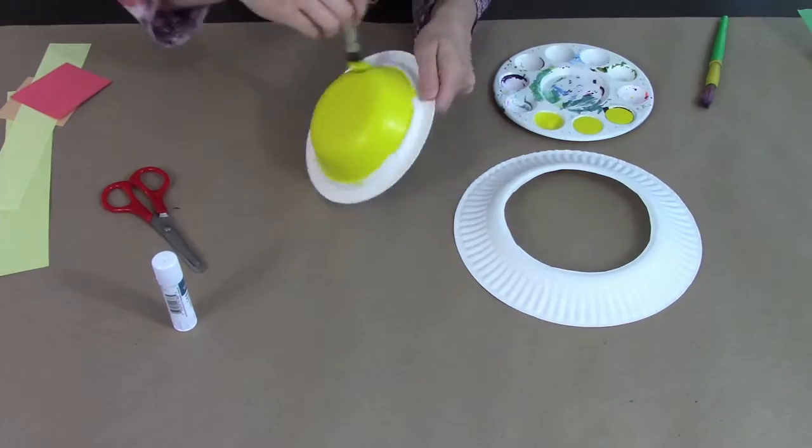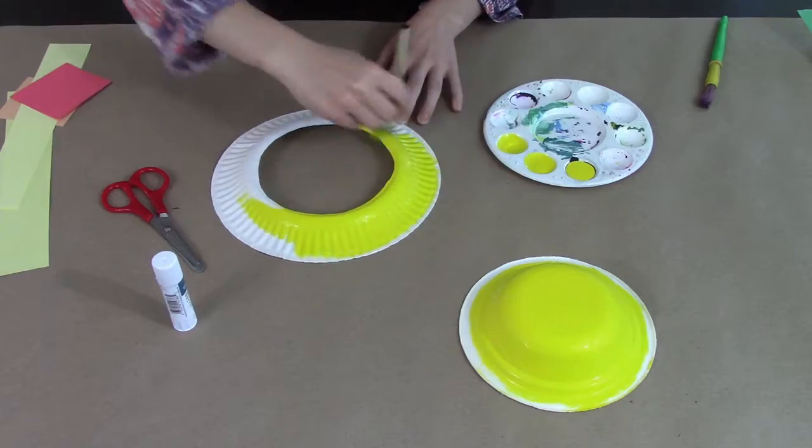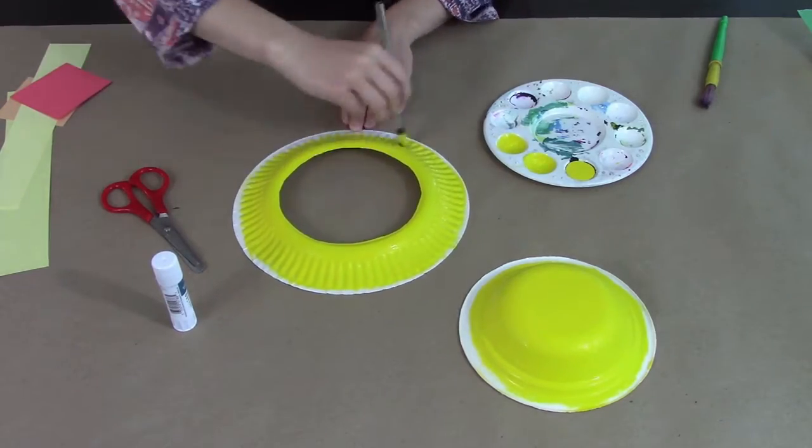Now you just need to decorate your bowl and your plate. I'm going to use paint to paint mine yellow so that it'll look like a straw hat once it's done.